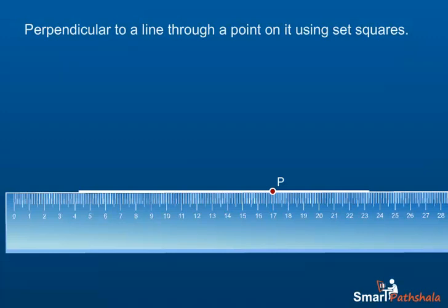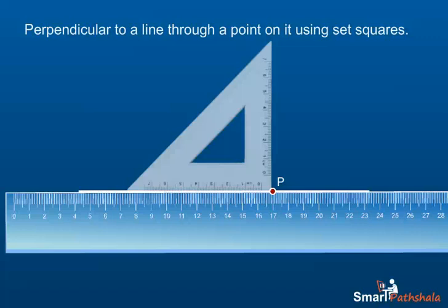Step 3: Without moving the ruler, place the set square on point P. Hold it firmly. Step 4: Draw a line along the edge of the set square that passes through P. Thus, we get the required perpendicular.